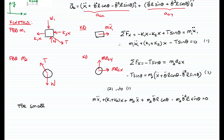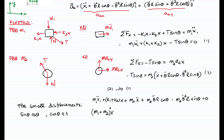For small displacements, we ignore the non-linear term. Sine of theta becomes theta and cosine of theta becomes 1. So the linearized first equation of motion becomes: (M1 + M2) x1 double-dot plus (k1 + k2) times displacement, plus M2 L theta double-dot equals zero. This is our first equation; the non-linear term is not included.